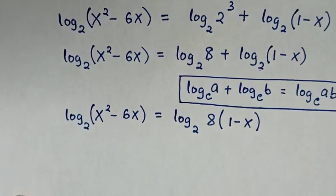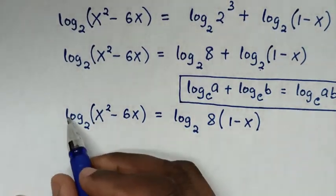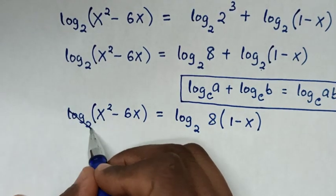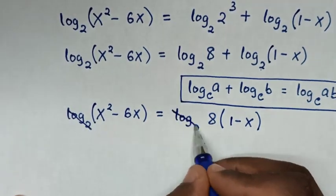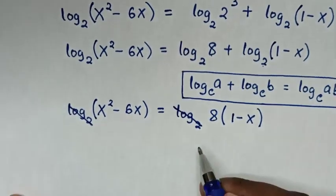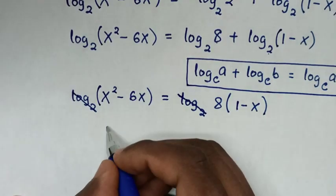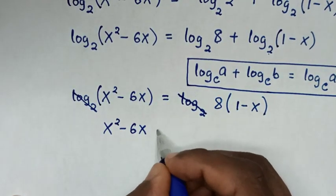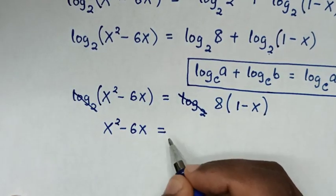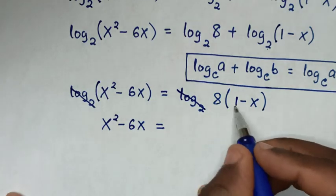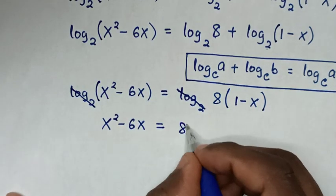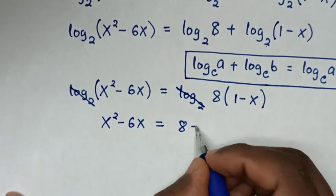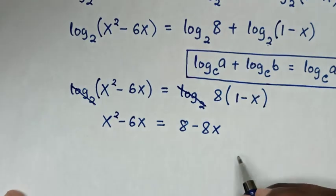Then, since log base 2 appears on both sides, the logs cancel. So it will be x² - 6x equals 8 times 1, which is 8, minus 8 times x, which is negative 8x.